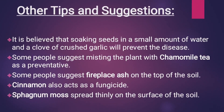Other tips and suggestions: soaking seeds in a small amount of water with crushed garlic will help prevent the disease — add a clove of crushed garlic while sowing your seeds. Some people suggest misting the plant with chamomile tea as a preventative. Fireplace ash on the top of the soil, cinnamon acting as a fungicide, and sphagnum moss spread thinly are all basic tips and suggestions that can help avoid damping-off disease or any kind of fungal disease.